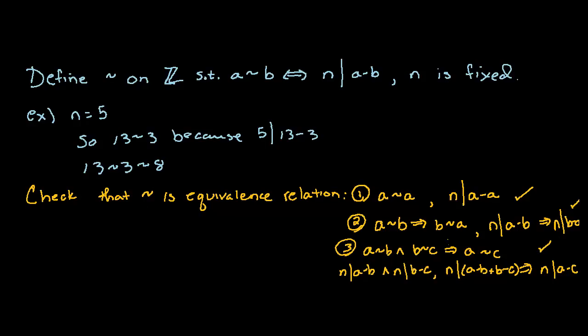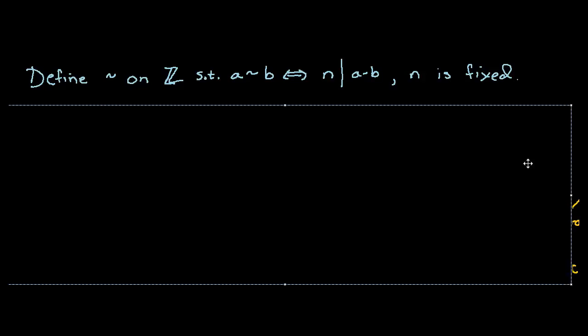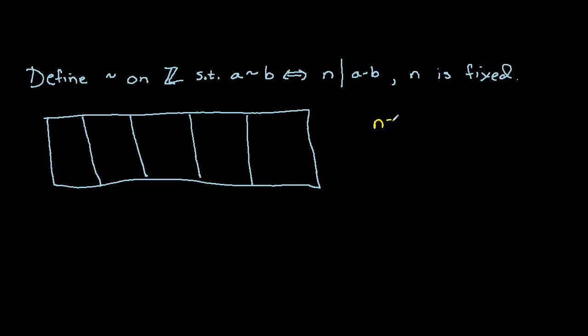So our next question might be, well, if this is an equivalence relation, what are the equivalence classes? And how does this actually partition our set? So let's take a look at that. I'm going to draw a little chart here. So you may want to organize your work as follows. And I'm going to make five different columns here. And let's take a look at this for N equals 5.